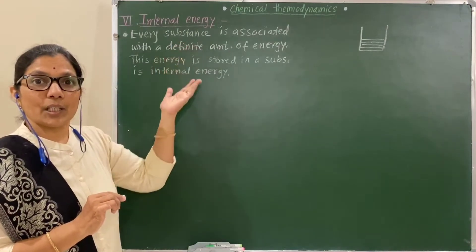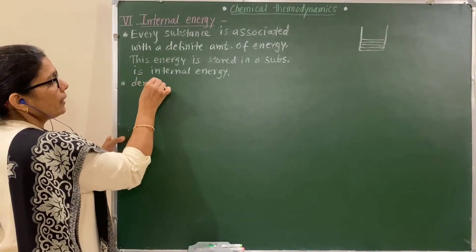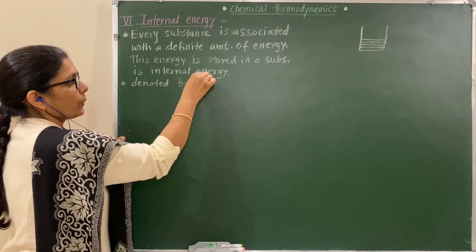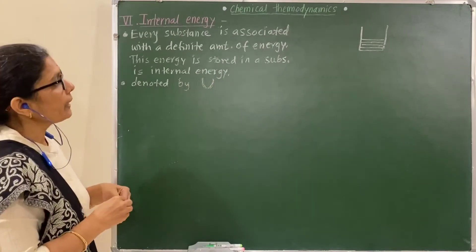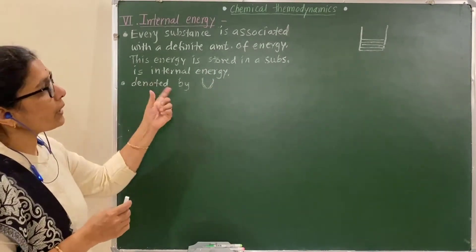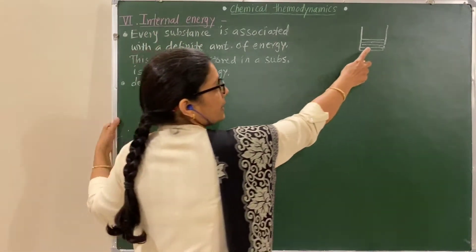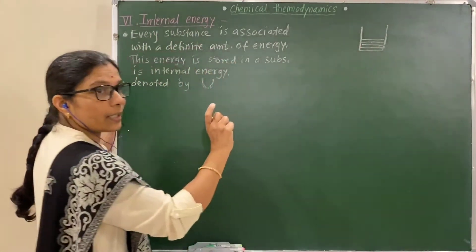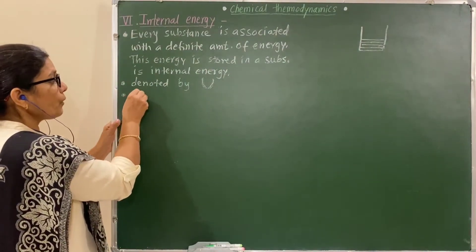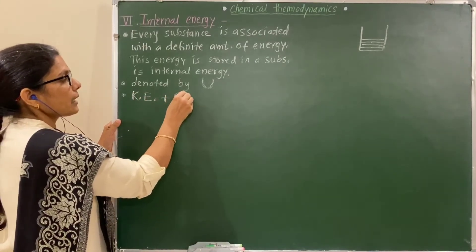Internal energy is denoted by the symbol U — capital U. Now, this internal energy of a substance is made up of the kinetic energy and potential energy of individual particles present in that system.